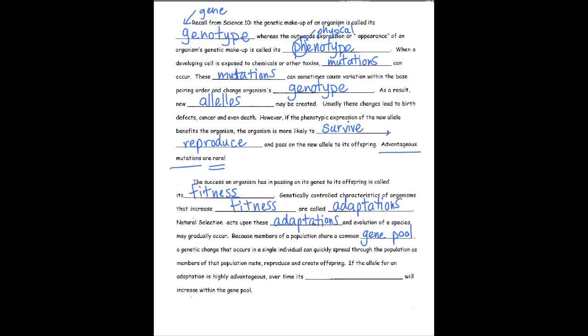Because members of a population share a common gene pool, a genetic change that occurs in a single individual can quickly spread through the population as members of that population mate, reproduce, and create offspring. If the allele for an adaptation is highly advantageous, over time its relative frequency will increase within the gene pool.